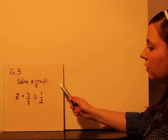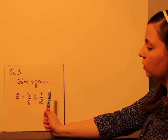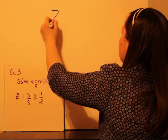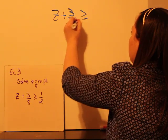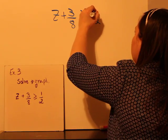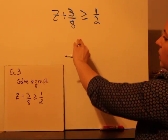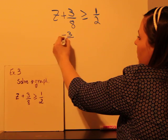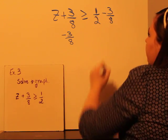We're going to solve and graph. We've got one half. We've got z plus three eighths is greater than or equal to one half. And now we're going to need to subtract this three eighths here. So minus 3 eighths, minus 3 eighths.